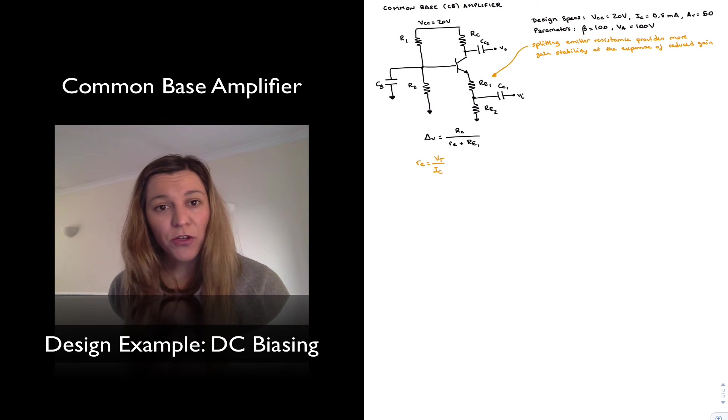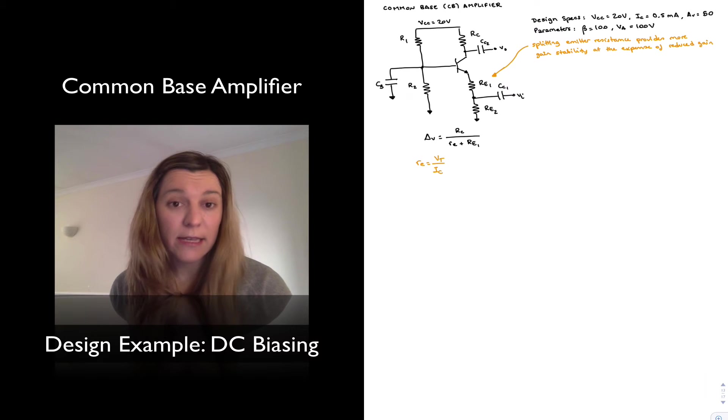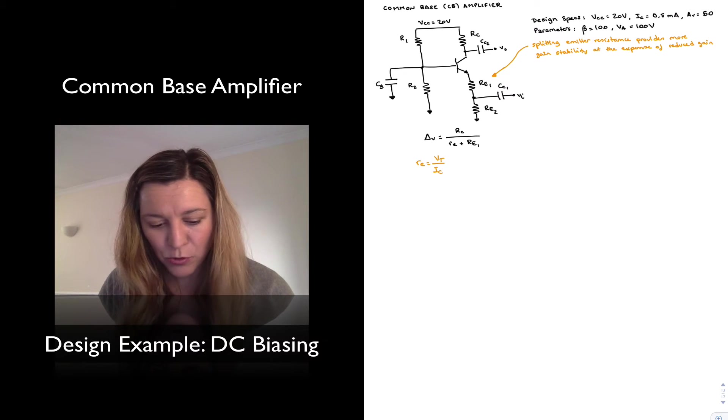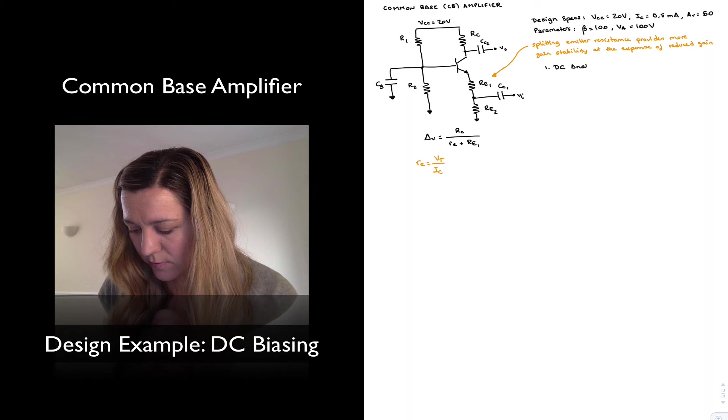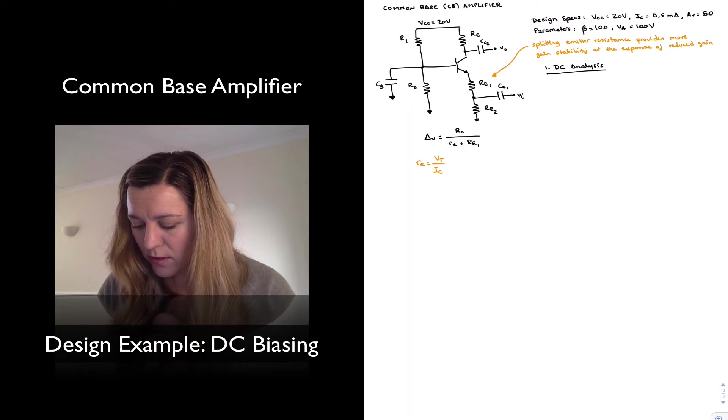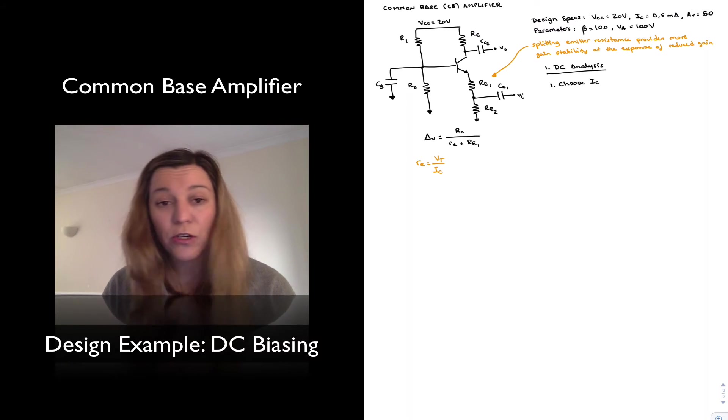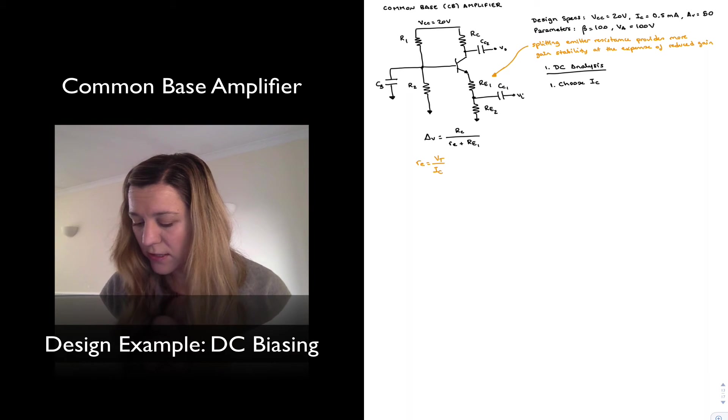All right, just like with any other circuit, we're going to first do the DC analysis and then the AC analysis. So for the DC portion, I'll be setting my Q point. Step number one is always to select a collector current, a quiescent current if we haven't. In this case, we're going to use 0.5 milliamps.